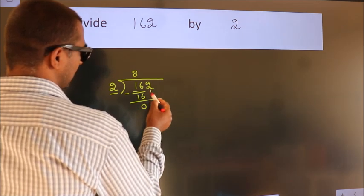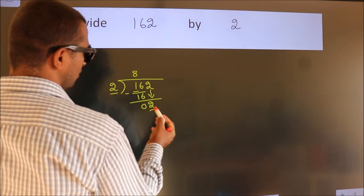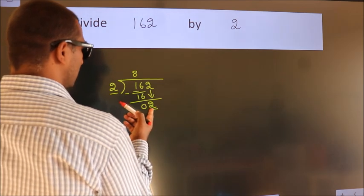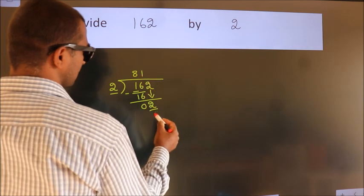After this, bring down the beside number. So, 2 down. So, 2. When do we get 2? In 2 table, 2 times 1, 2.